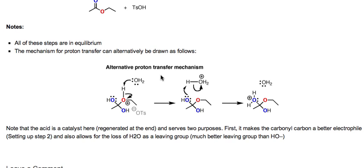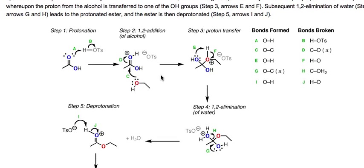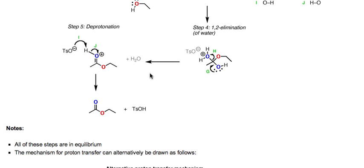That's all on the Fischer Esterification. It is one of the most important reactions of carboxylic acid derivatives, and its mechanism is one of the most commonly tested in organic chemistry. I'd recommend looking closely at the PAPED mechanism — I've got a post that covers not only the Fischer Esterification mechanism but many other types of reactions as well. Thanks for watching, and if you have any questions or comments, please leave them below.